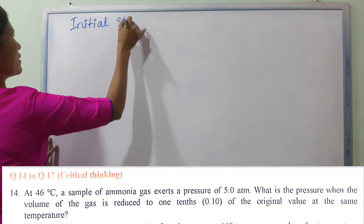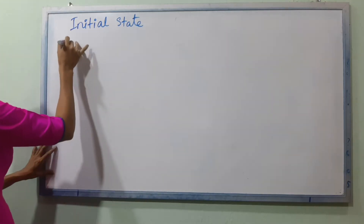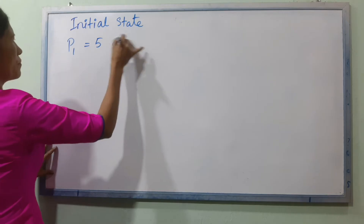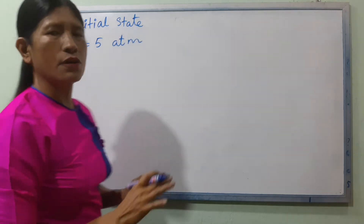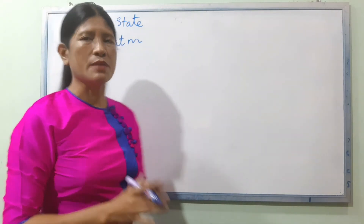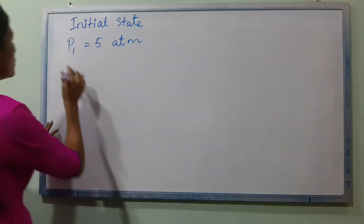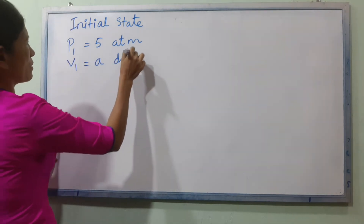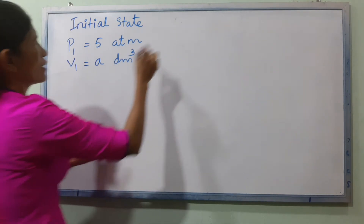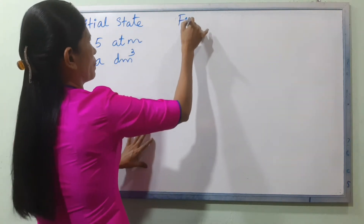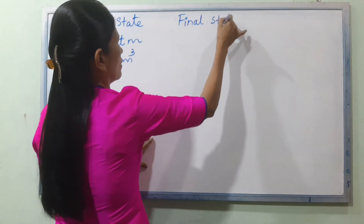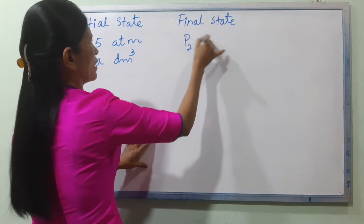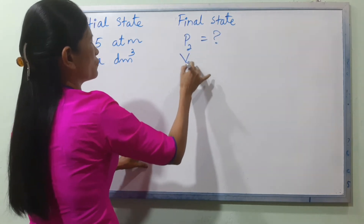Initial state: P1 is 5 ATM. At the same temperature, we use V1. Now final state: P2 — what is V2?